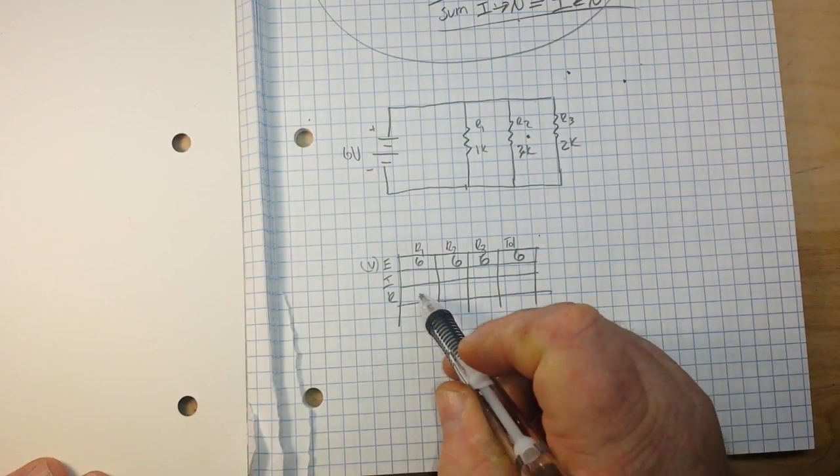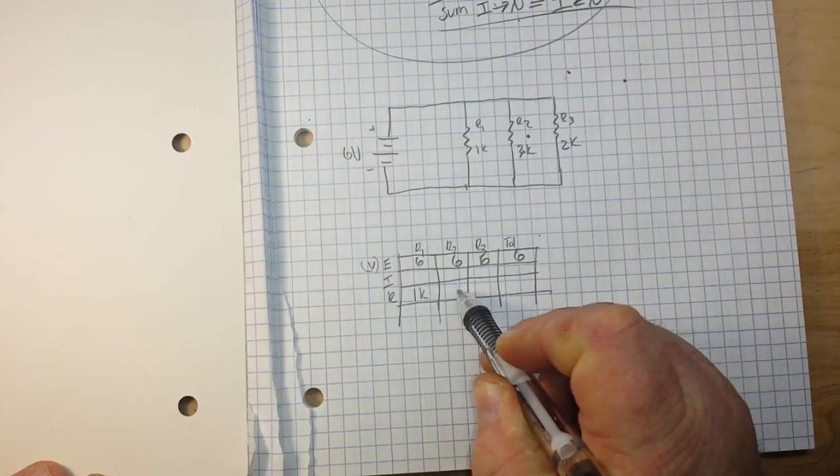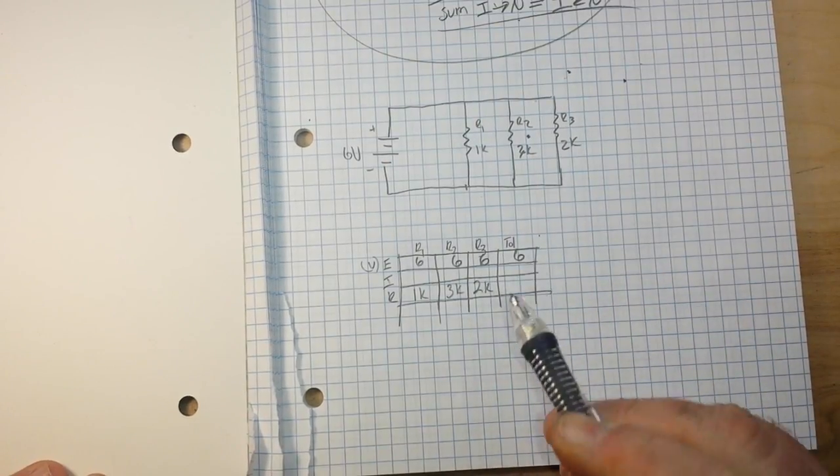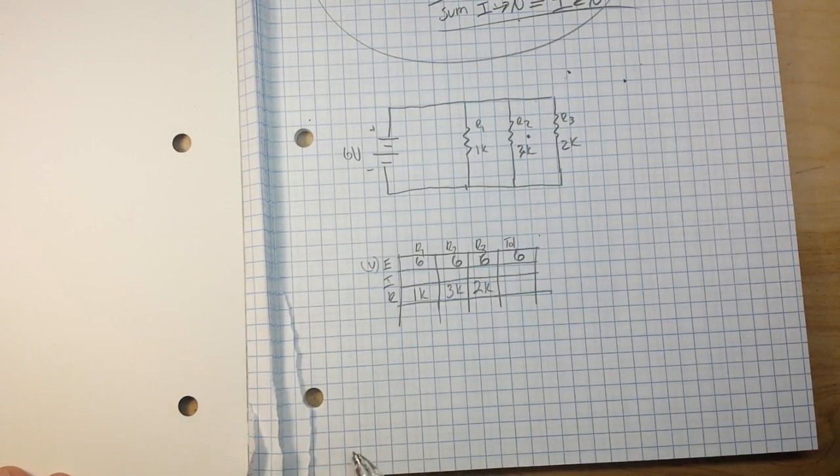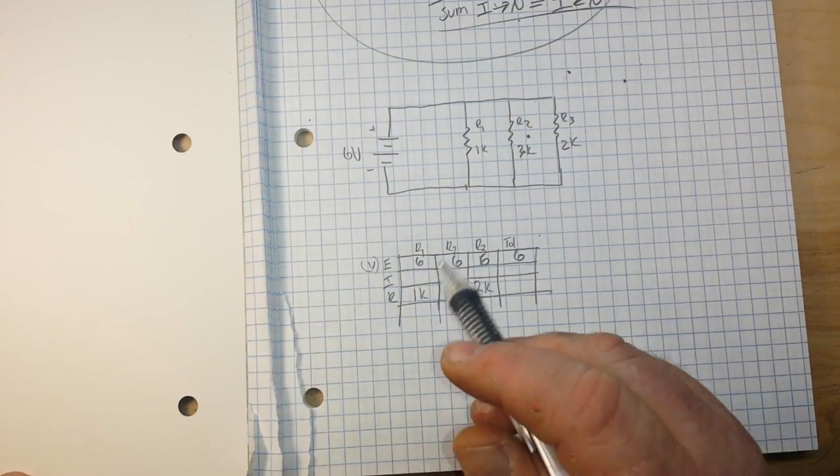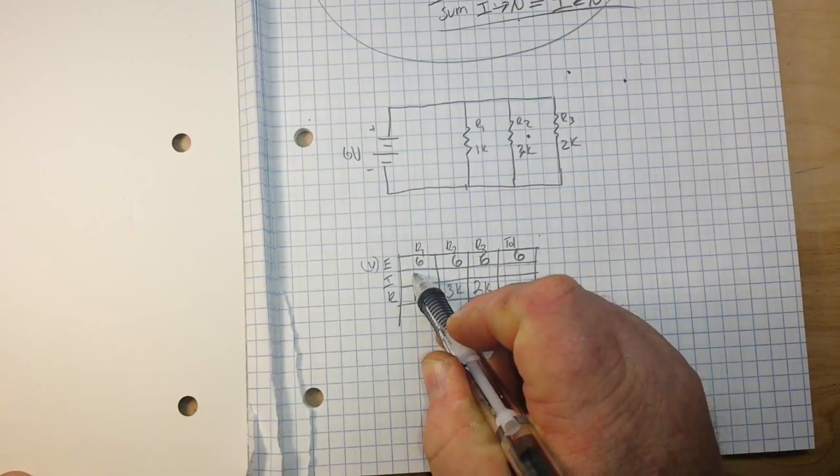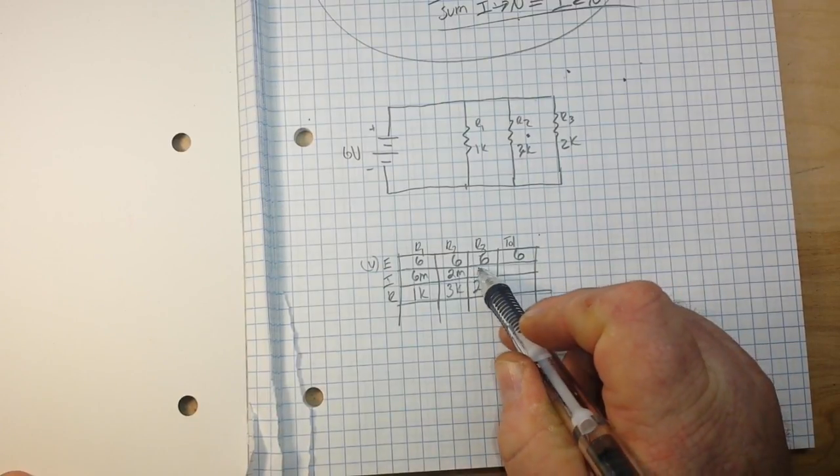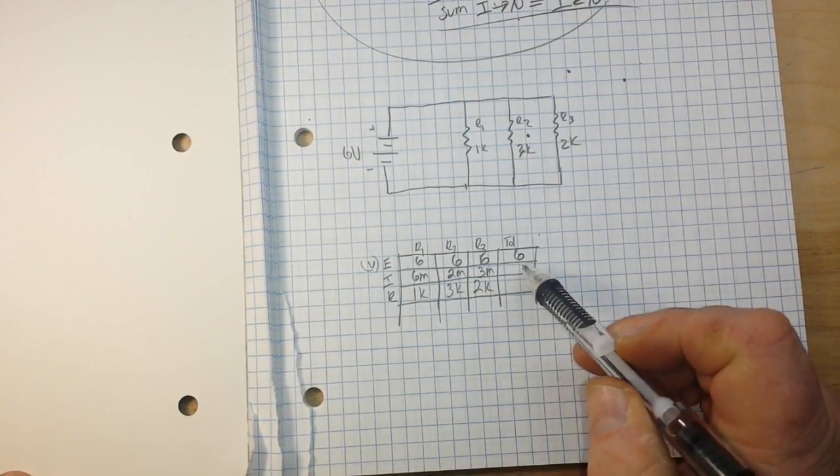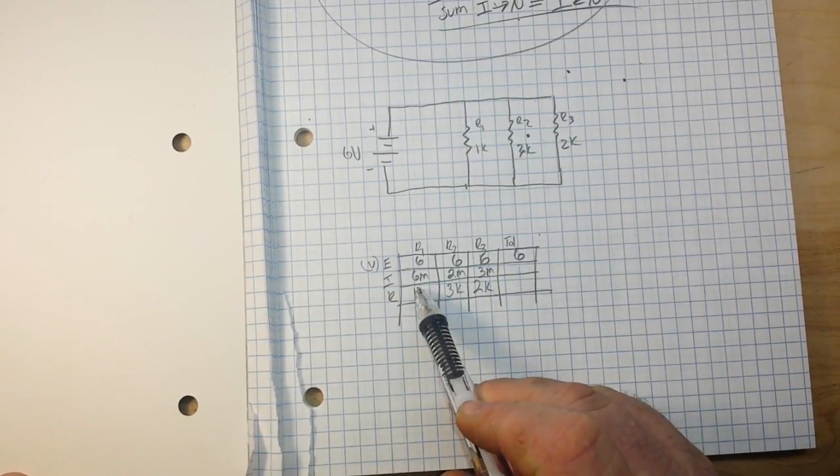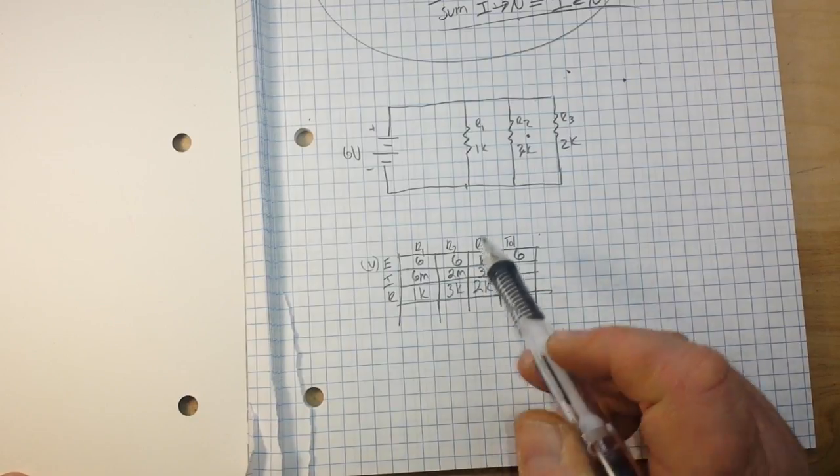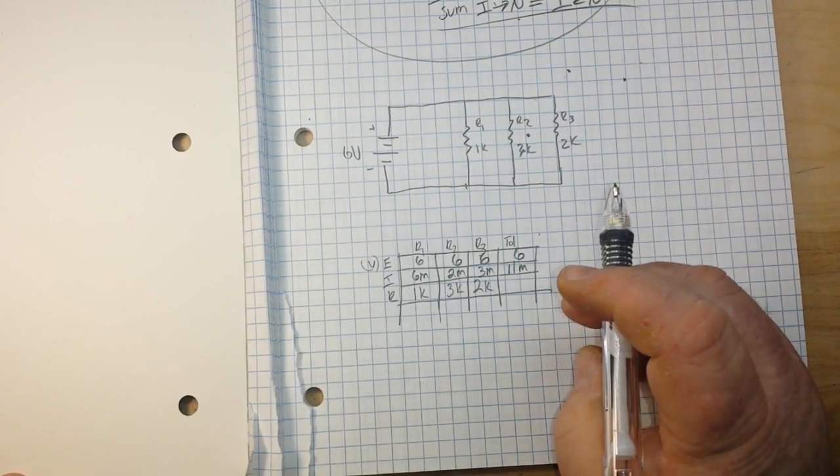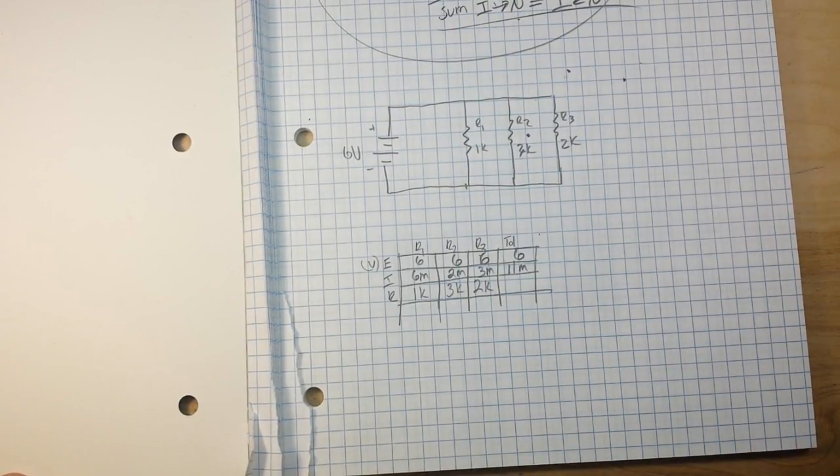Now we also know our resistances: 1k, 3k, and 2k. So we can use Ohm's law to calculate our currents going through each part of this: six milliamps, two milliamps, and three milliamps. But what we don't know are our totals. Now we can add this up here and get our total milliamps because Kirchhoff's current law: 11 milliamps. Pretty simple so far, right? Are you following me?